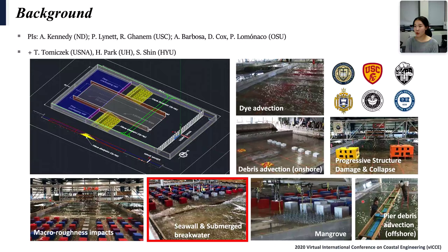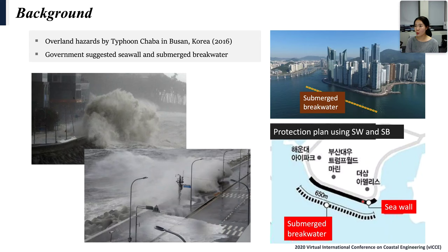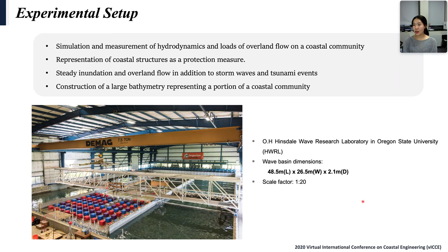Our research is the overland flow experiment over the entire city area, because in 2016, a severe typhoon attacked Busan, the second largest city in South Korea. This area has high-story buildings near the coast, so the government wanted to construct hard structures to protect the apartment. We joined the project because the experimental setup was perfect for our case.